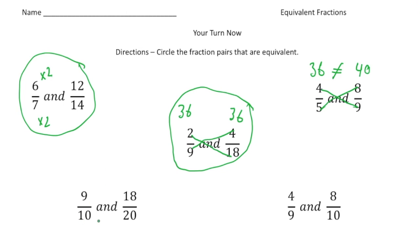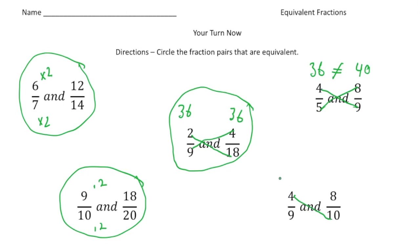Next: nine tenths and 18 twentieths. Nine times two gives me 18, and ten times two gives me 20. So these two fractions are equal. Finally, four ninths and eight tenths: four times ten is 40, and eight times nine is 72. Because 40 does not equal 72, those two fractions are not equal. How'd you do?